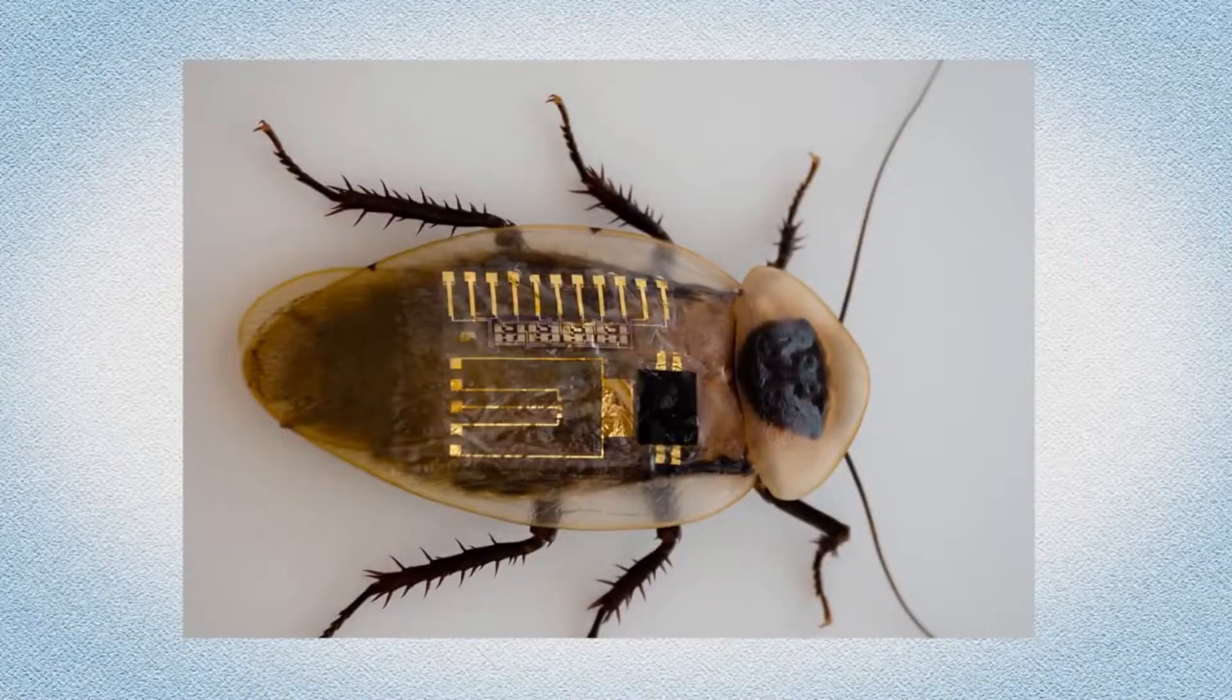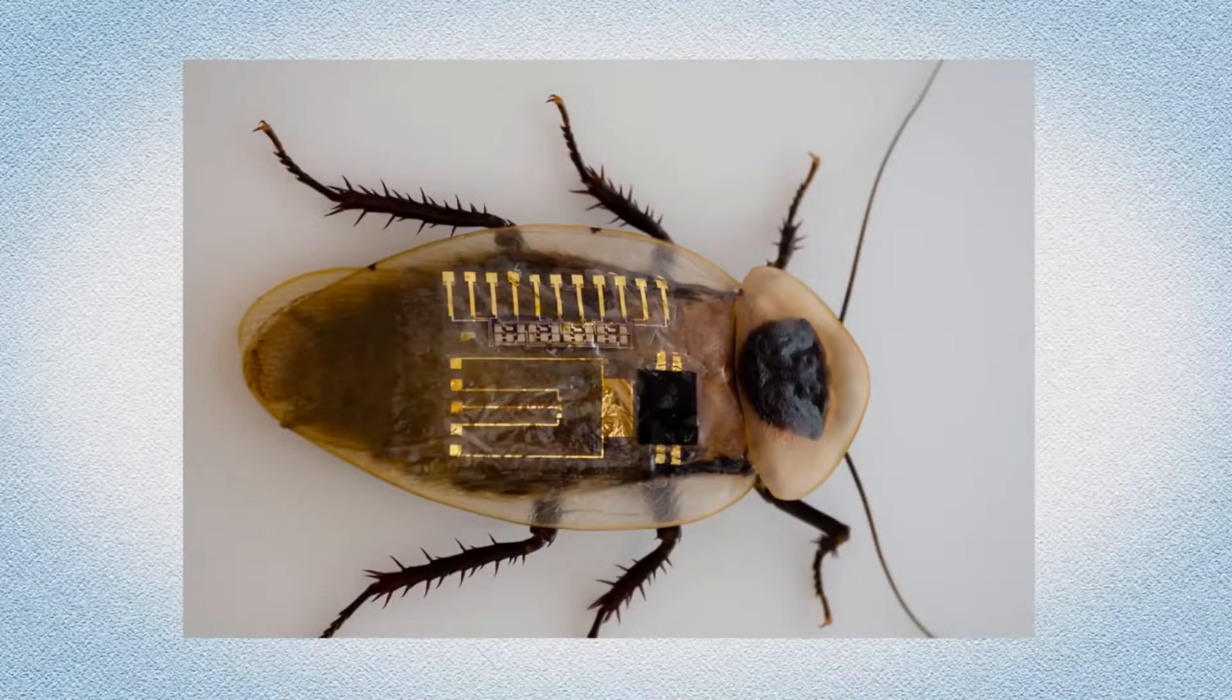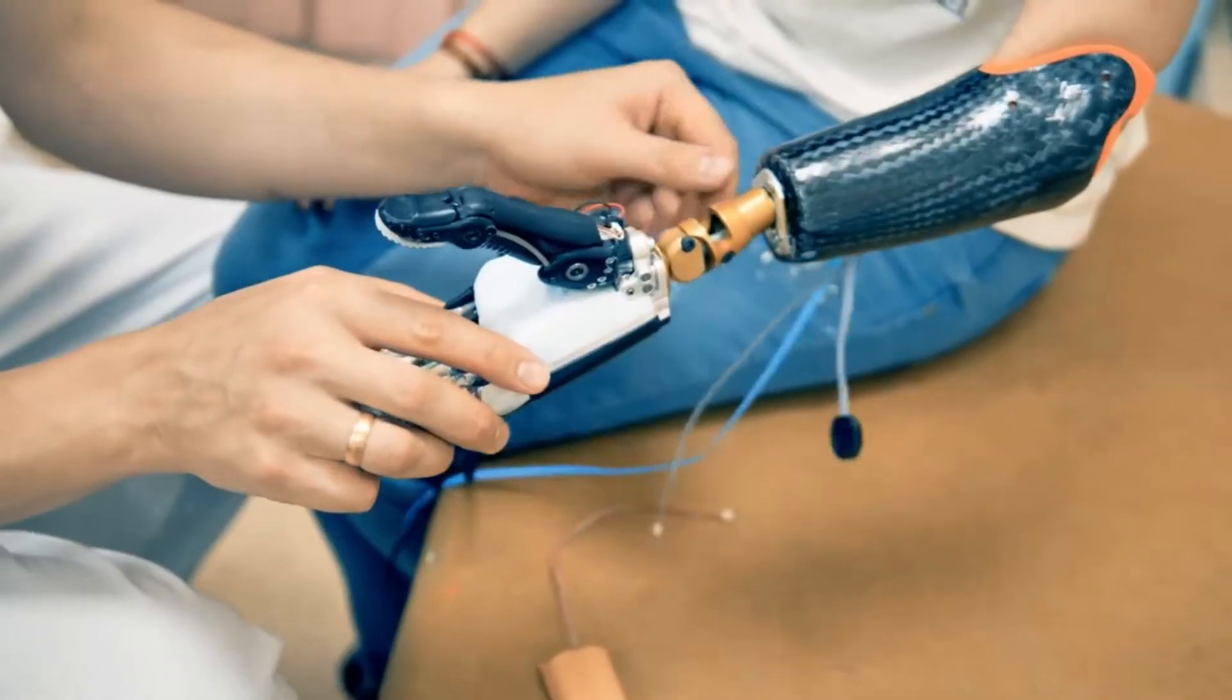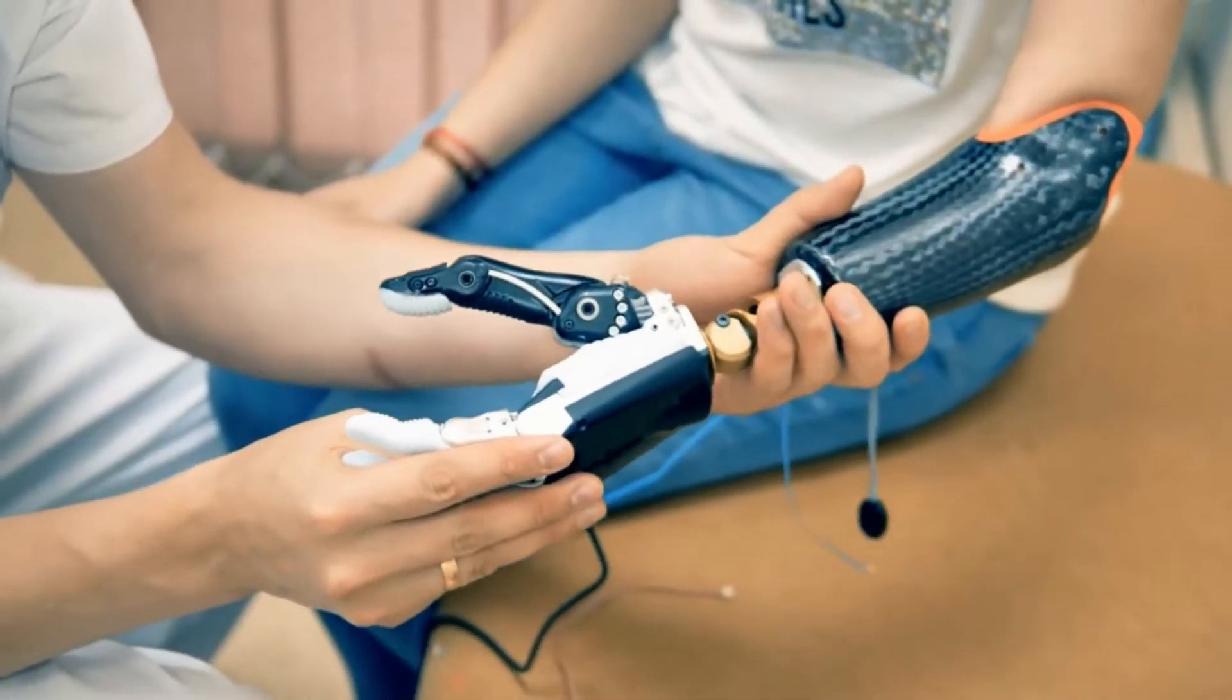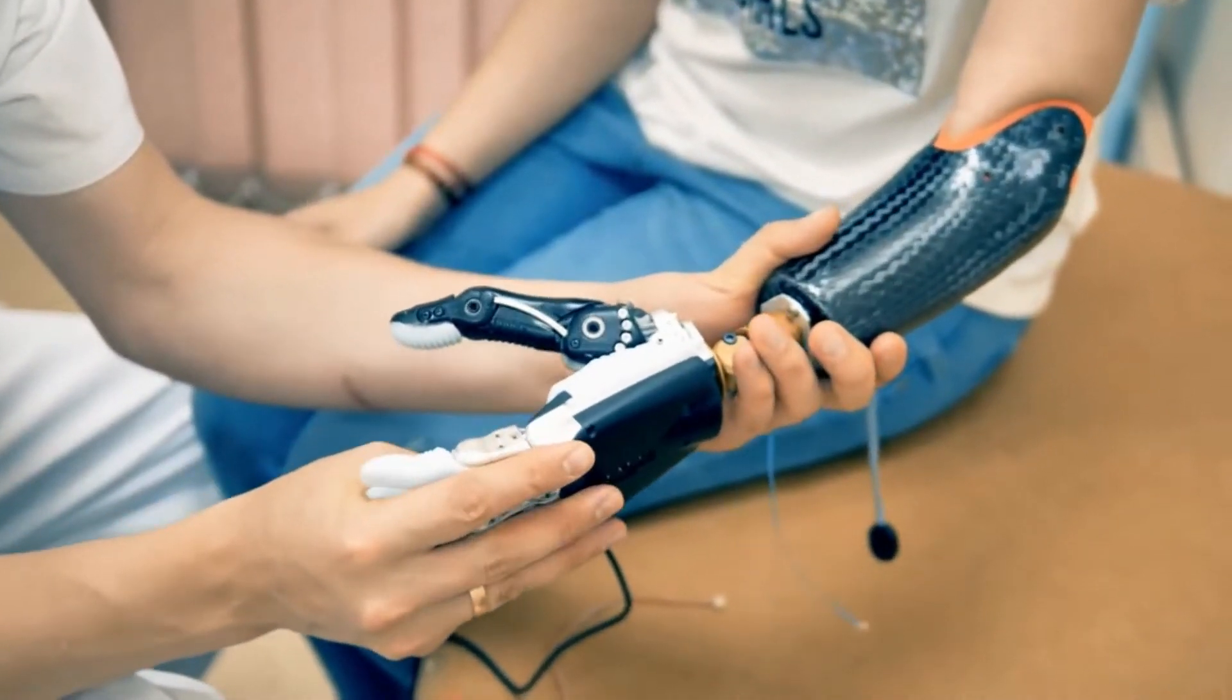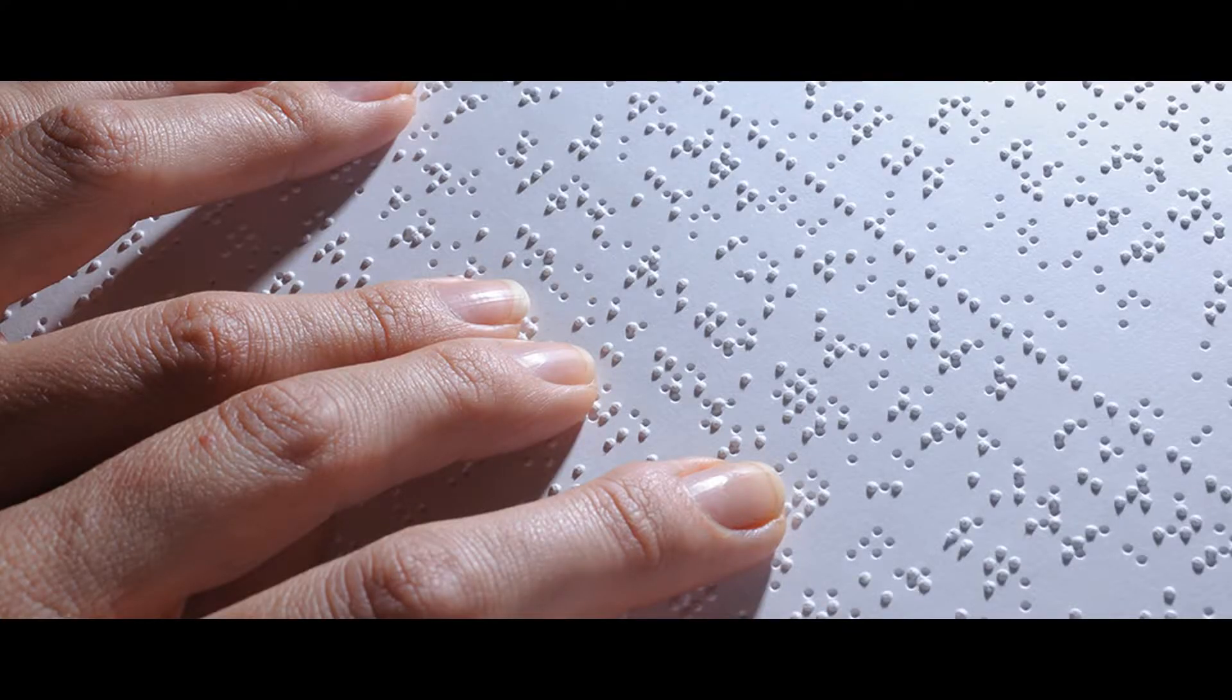they hooked up their artificial nerve to a cockroach leg and applied tiny increments of pressure to their touch sensor. The electronic neuron converted the sensor signal into digital signals and relayed them through the synaptic transistor, causing the leg to twitch more or less vigorously as the pressure on the touch sensor increased or decreased.